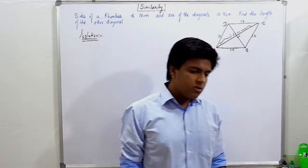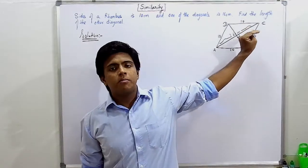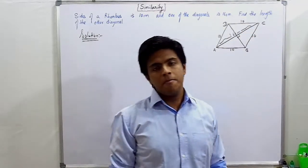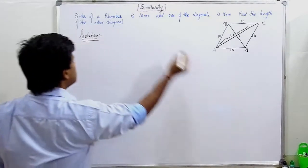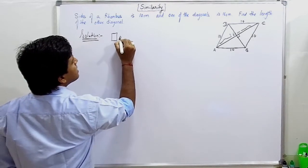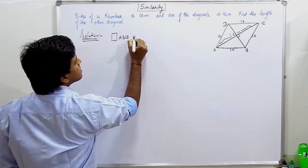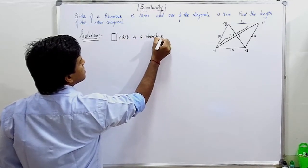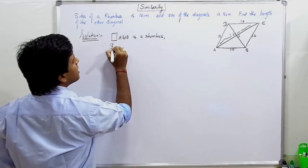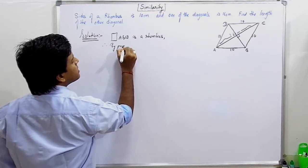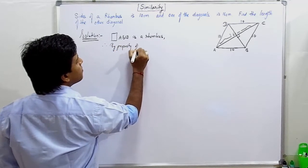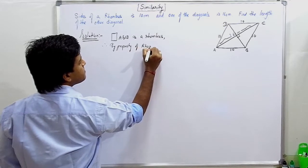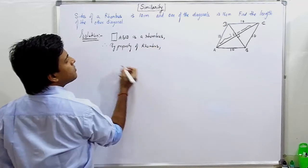In this case we need to know that it is a rhombus. Diagonals bisect each other perpendicularly. So I am saying that ABCD is a rhombus, therefore by property of rhombus.